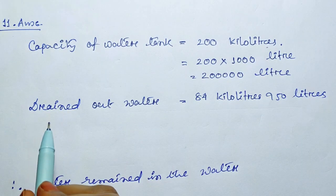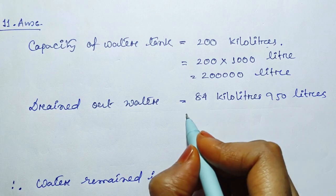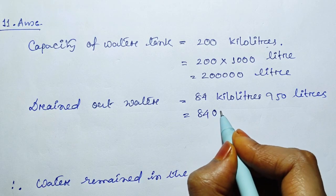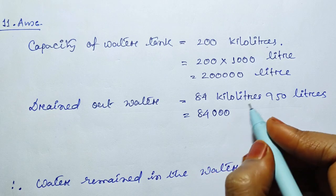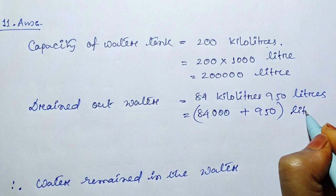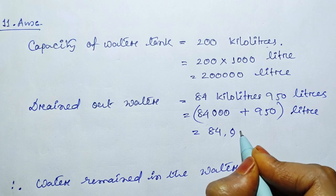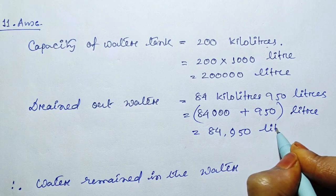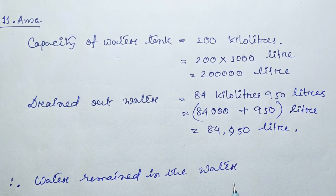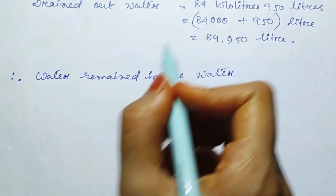This is 100 kg and 950 liters. 84 kiloliters to liters: 84,000 plus 950 liters equals 84,950 liters. That is how much water remains in the tank. It is a subtraction (minus) operation.